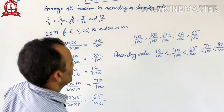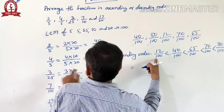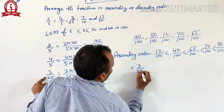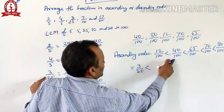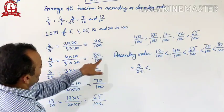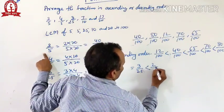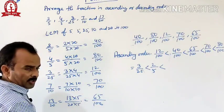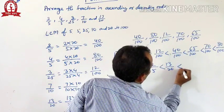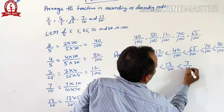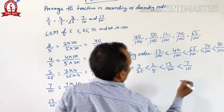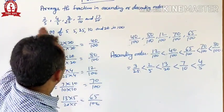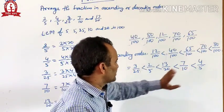Then find their simplest form. The simplest form of 12 by 100 is 3 by 25 — so the smallest fraction is 3 by 25. The simplest form of 40 by 100 is 2 by 5. The simplest form of 65 by 100 is 13 by 20. Then 7 by 10. This is the arrangement of fractions in ascending order.